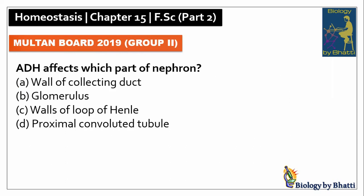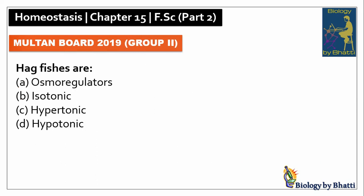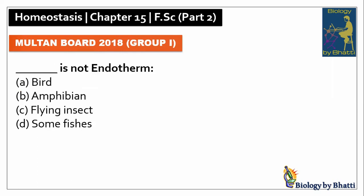Multan Board 2019 Group 2: ADH affects the walls of the collecting duct, so the answer was A option. In this paper, hagfishes are isotonic osmoconformers, so the answer was B option.